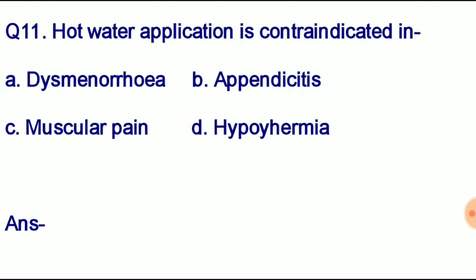Question number eleven: hot water application is contraindicated in — option A: dysmenorrhea, option B: appendicitis, option C: muscular pain, option D: hypothermia. Correct answer: option B, appendicitis. Hot application is avoided in appendicitis to prevent bleeding.